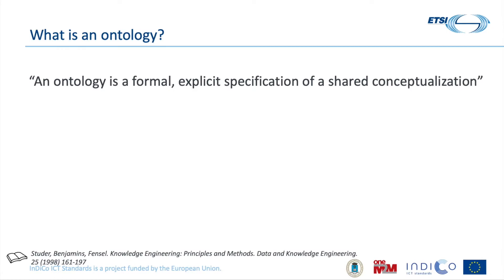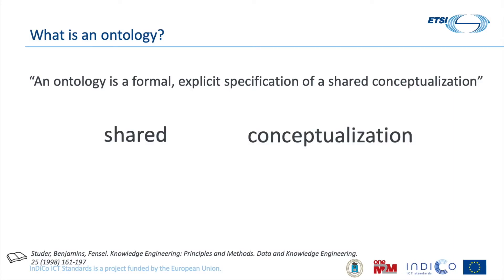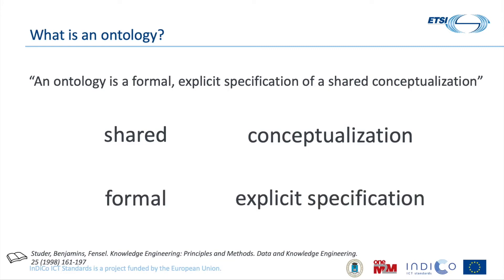In this short definition, we already have a lot of information about what an ontology is. Of course it is a conceptualization — a model that represents some part of the world — but the key part is that this is shared. This is not the view of one individual or one organization, but is shared between multiple actors. On the other hand, this is an explicit specification: all the parts of my ontology are defined in an explicit and formal way. The formality, as we saw before, is key.